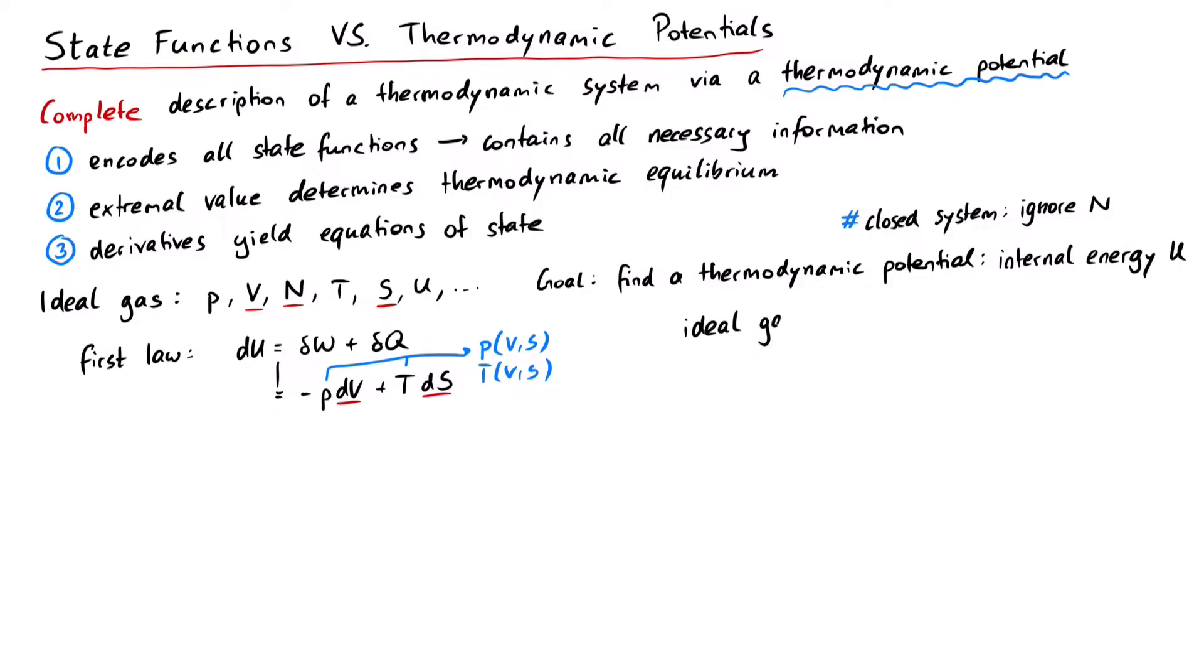This is where the equation of state gets important. The ideal gas law is pV equals nKBT. And we now declare pressure to be our state function. That is, we can substitute pressure as nKBT over V. Now we need to replace T here and here as a function of V and S. Well, another important equation of state for the ideal gas is the caloric equation of state, where the internal energy is related to temperature like this.